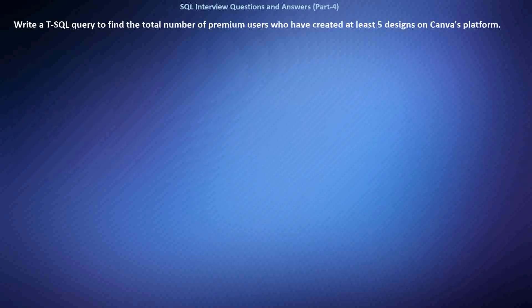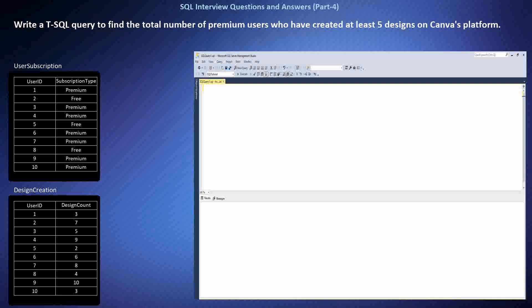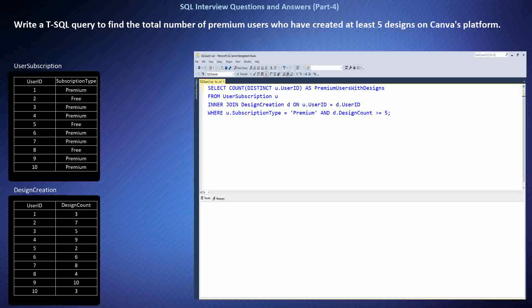Write a SQL query to find the total number of premium users who have created at least five designs on Canva's platform. We want to identify premium users who are actively engaged by creating a significant number of designs. This requires querying two tables: one for user subscription status and another for design creation count. This SQL query utilizes an INNER JOIN between the UserSubscription and DesignCreation tables on the user ID, filtering for premium users with at least five designs.